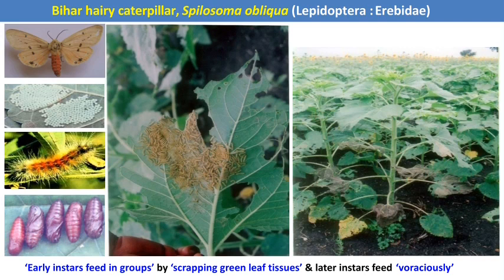The next pest is Bihar hairy caterpillar. It is a Lepidopteran pest and acts as a defoliator in sunflower. Egg laying takes place on the surface of leaves, and after hatching, the caterpillar emerges. The early instar larvae (first and second instar) feed in groups on the surface of leaves, scraping the epidermal layers, causing white papery patches on the leaves. After subsequent growth, larvae directly attack the leaves and complete defoliation occurs.